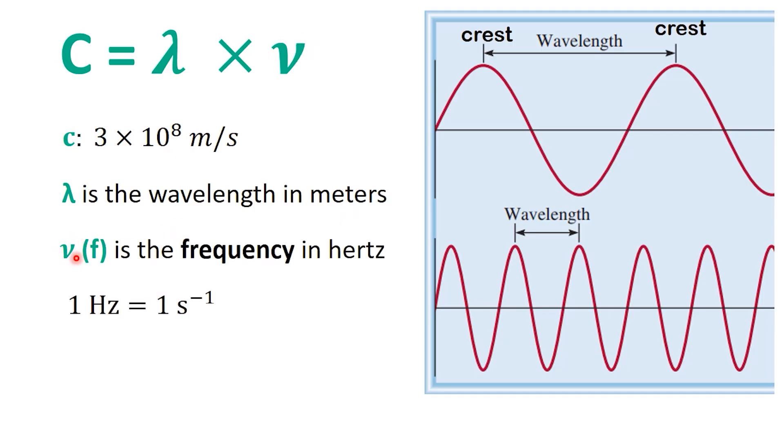Nu represents the frequency. This tells us how many wave cycles pass a given point in one second. Essentially, how often the wave oscillates.